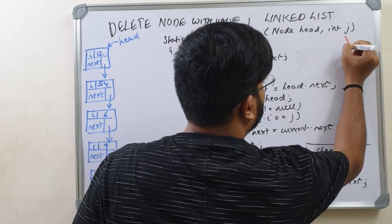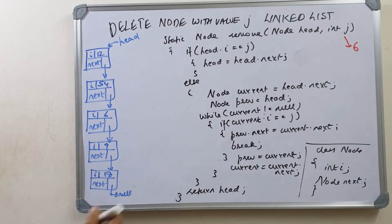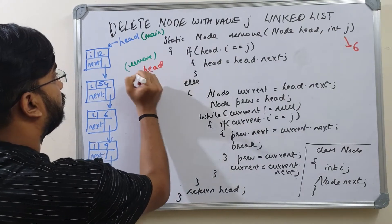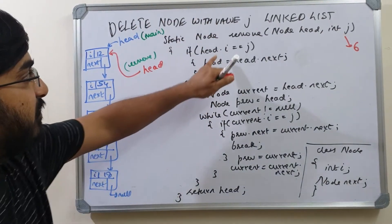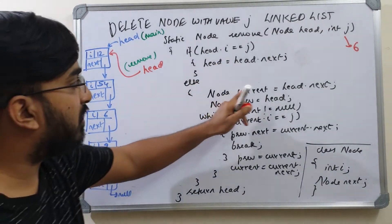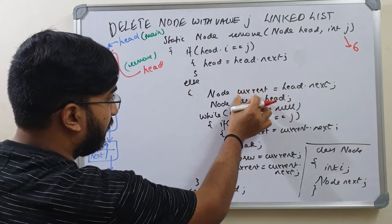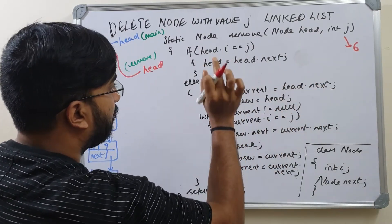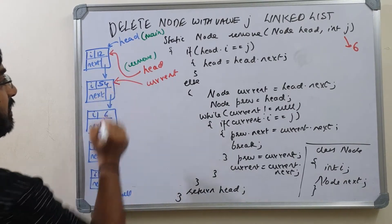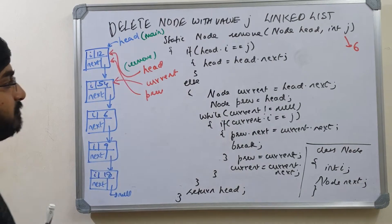Suppose j is 6. We enter the remove method with head pointing to the same location as in main. We check if head dot i equals j — head dot i is 12, j is 6, so this is false. We go to the else part. Node current equals head dot next, so current points to the node containing 54. Previous is set to head, pointing to the node containing 12.